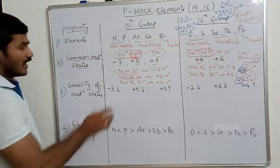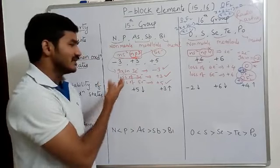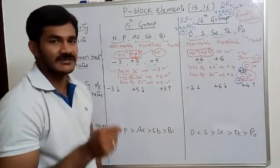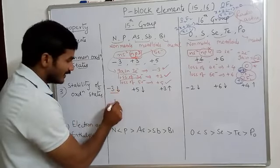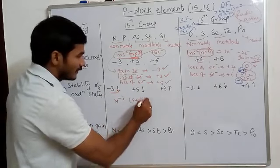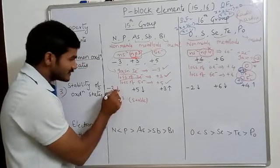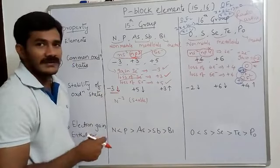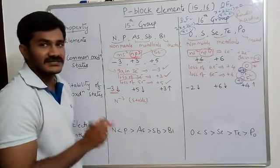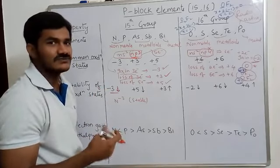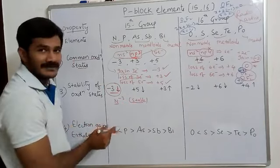The stability order of oxidation states changes down the group. The minus 3 oxidation state stability decreases down the group because lower elements have increasing metallic nature. Nitrogen can easily gain 3 electrons and form stable minus 3, but phosphorus, arsenic, antimony, and bismuth cannot do so equally well.